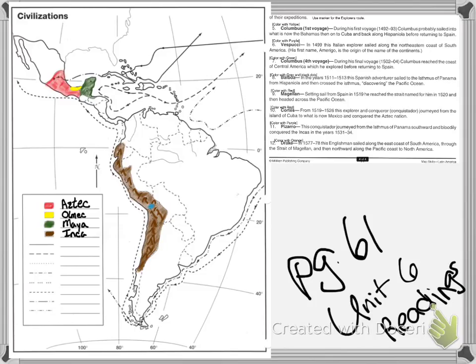Our focus is on the explorers and which route was connected to the discussion in the reading. Let's begin with Columbus's first voyage, from 1492 to 1493. Columbus probably sailed into what is now the Bahamas, then on to Cuba and back alongside Hispaniola before returning to Spain.